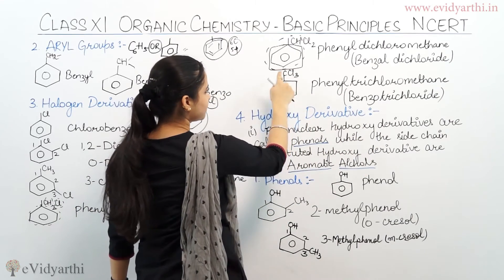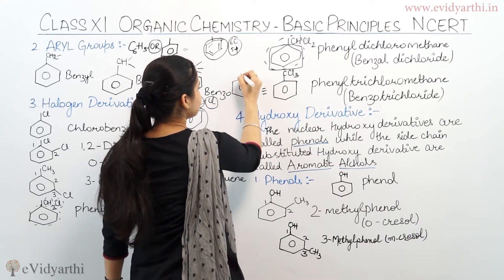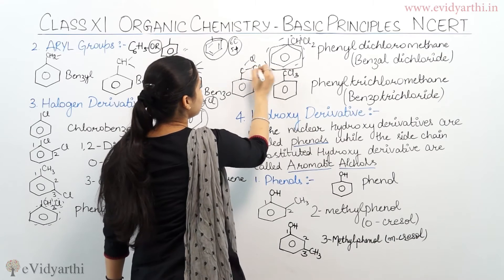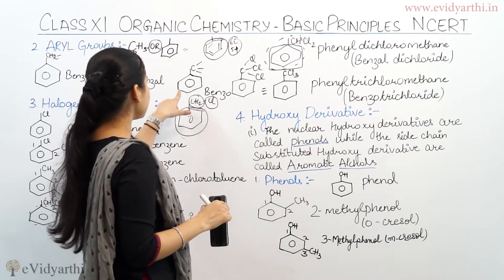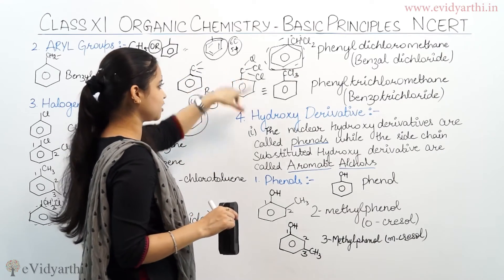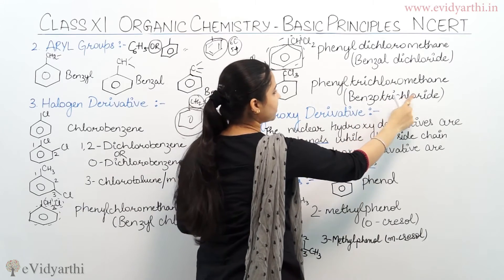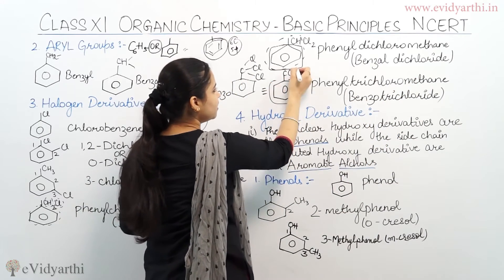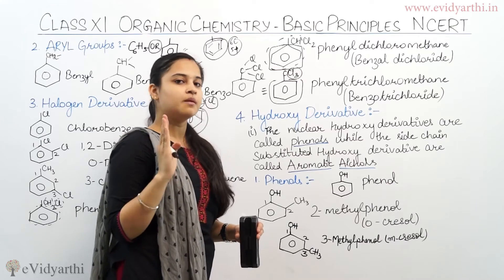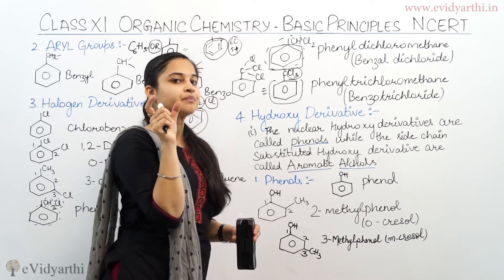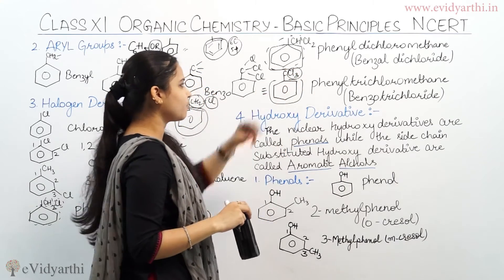At the next point we have CCl3 attached to the ring. If I expand it: C, then Cl, then Cl, then Cl — there is no hydrogen atom attached. That means it is benzo. So what do I say? Benzo-trichloride. Or phenyl trichloromethane. Because of the presence of one carbon atom, and three chlorines, I call it phenyl trichloromethane or benzotrichloride.